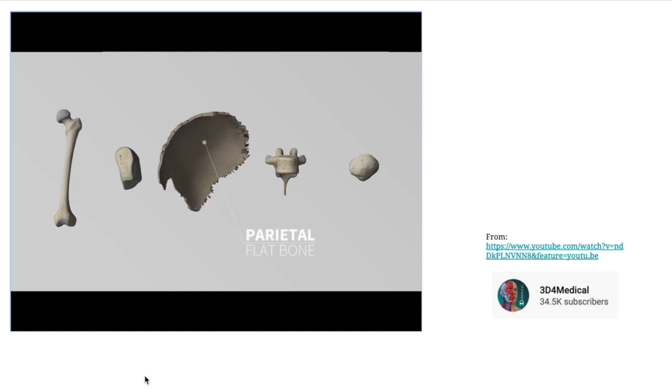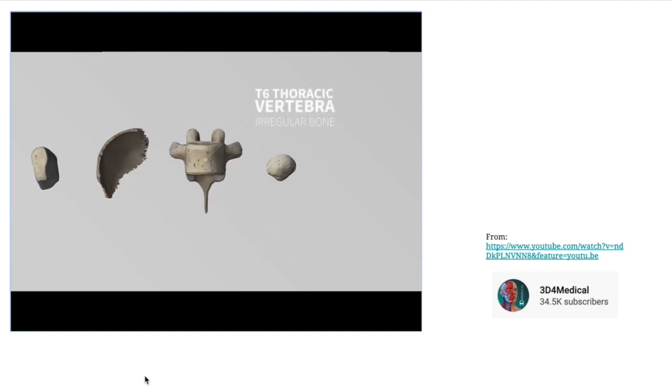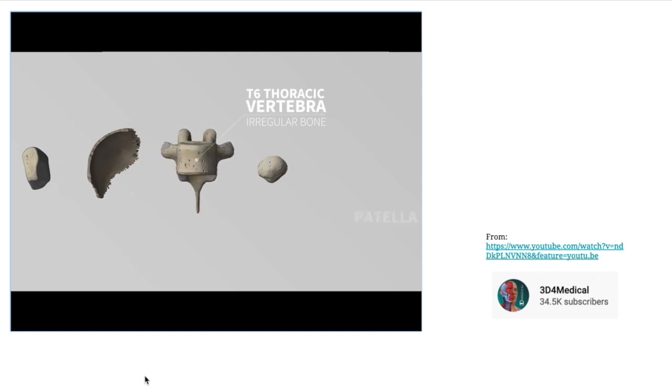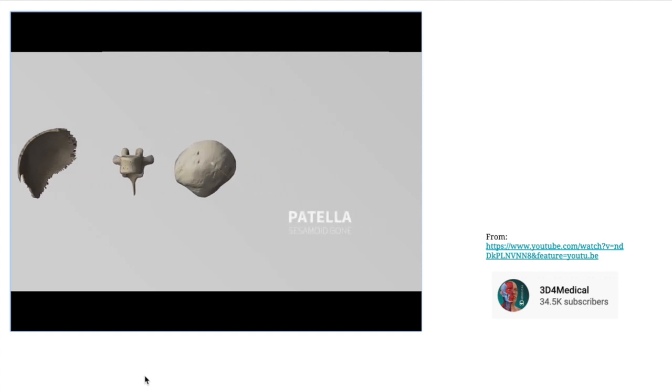Flat bones are broad and sheet-like and include bones of the skull that surround the brain, such as the parietal bones. Irregular bones are groups of bones that do not fit into the long, short, or flat groups, such as the T6 thoracic vertebrae. Sesamoid bones are a special group of bones that are found within tendons, such as the patella.